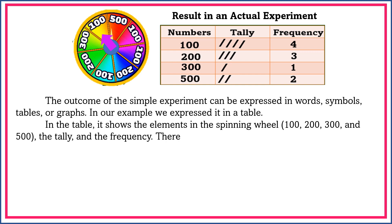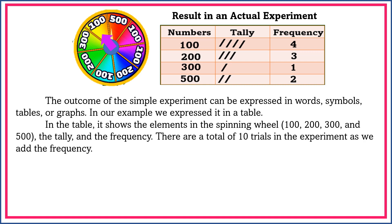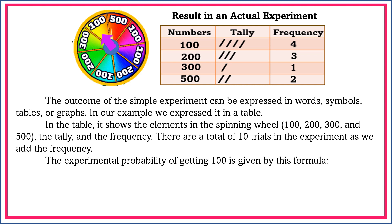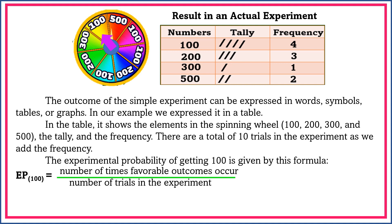The tally and the frequency. There are a total of 10 trials in the experiment as we add the frequency. The experimental probability of getting 100 is given by this formula: EP or experimental probability of 100 is equal to number of times favorable outcomes occurred divided by number of trials in the experiment. The number of times favorable outcomes occurred, as we see in the table, is 4. And the number of trials in the experiment is 10.